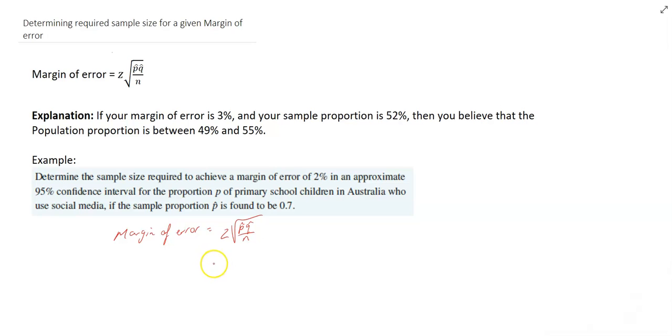Now, if the margin of error equals z square root p hat q hat over n, we know what our z score is going to be in this instance, right? Because we want a 95% confidence interval and we've memorized the number 1.96 for 95% confidence intervals. Now, we square root, p, sample proportion p is 0.7. Sample proportion q hat is 1 minus that, which is 0.3, over the sample size n, which I don't know.